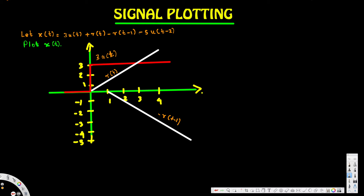The last term is -5u(t-2). This is a unit step function shifted two units to the right and scaled by -5, meaning it jumps down by 5 units starting at t = 2.